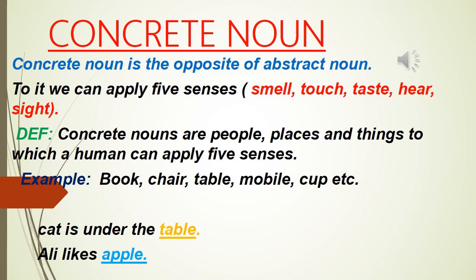Today's lecture is about the remaining noun types. Let's start with concrete noun. Concrete noun is the opposite of abstract noun. Abstract noun is a noun to which a human cannot apply the five senses, so concrete noun is the opposite — it is a noun to which a human can apply the five senses.